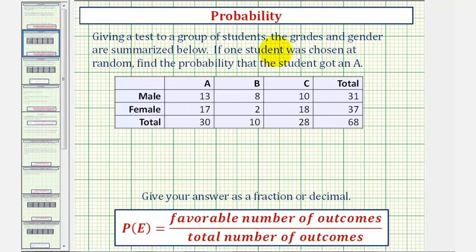Giving a test to a group of students, the grades and gender are summarized below. If one student was chosen at random, find the probability that the student got an A.